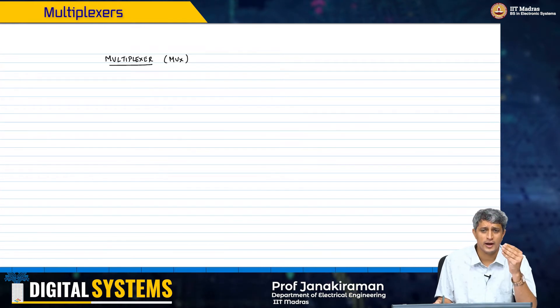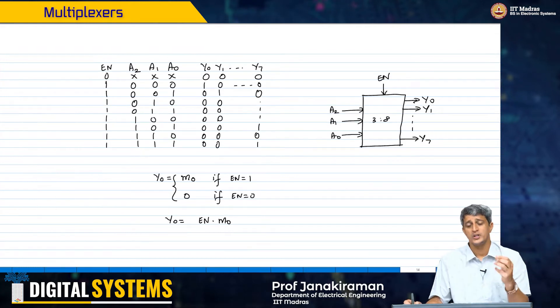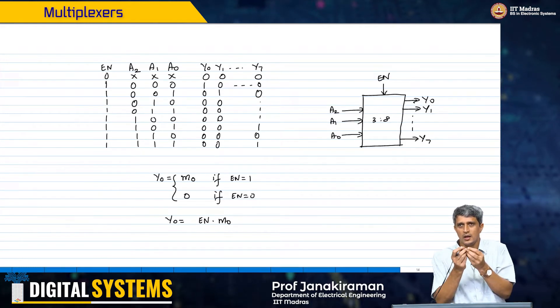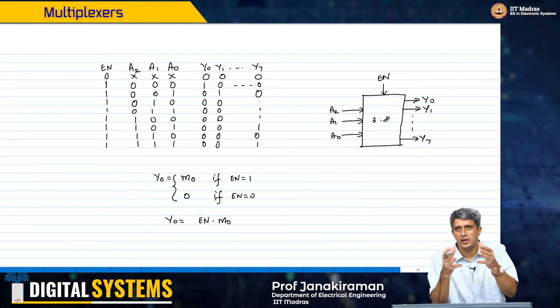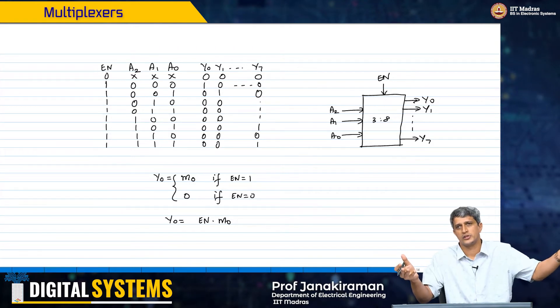By the way in the decoder, if you look at what we are trying to do, why is it called a decoder? Because the information of the address is encoded in 3 bits and we are decoding what that actual information is.